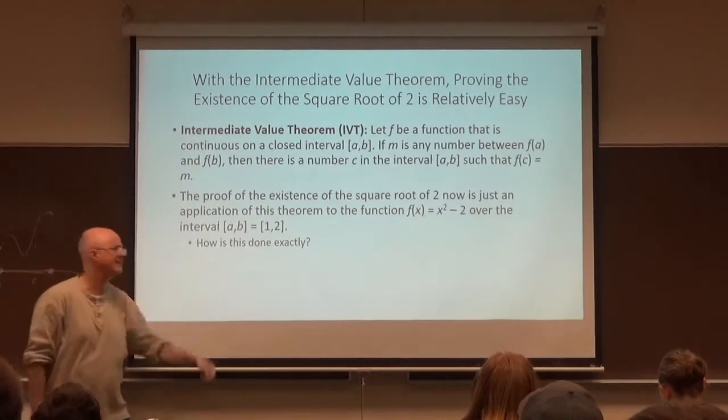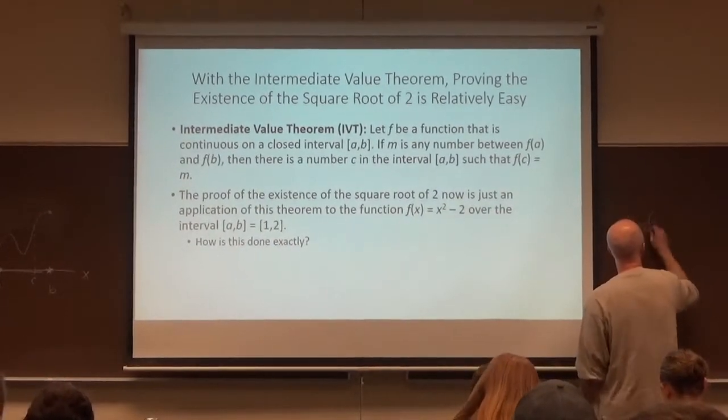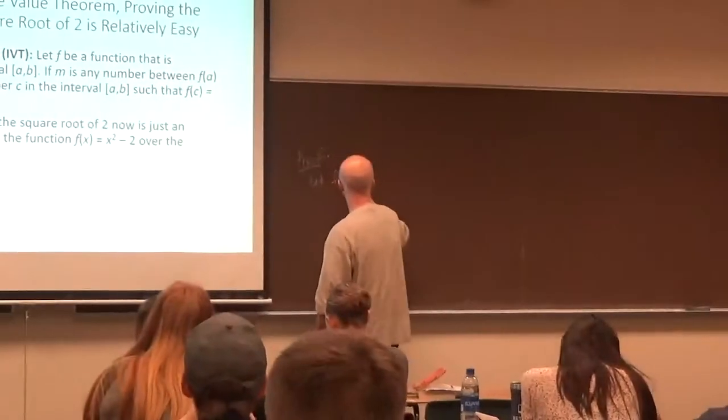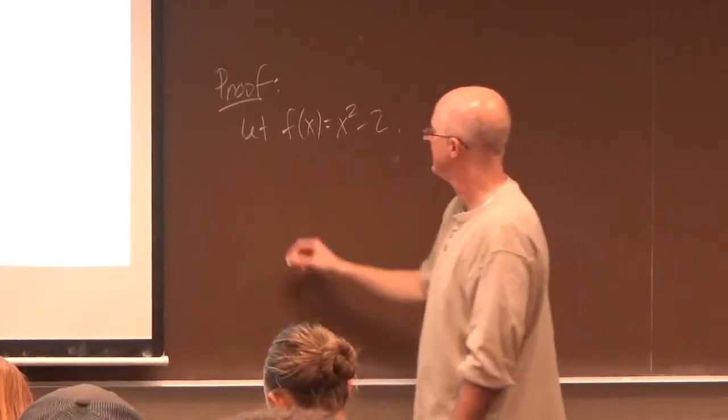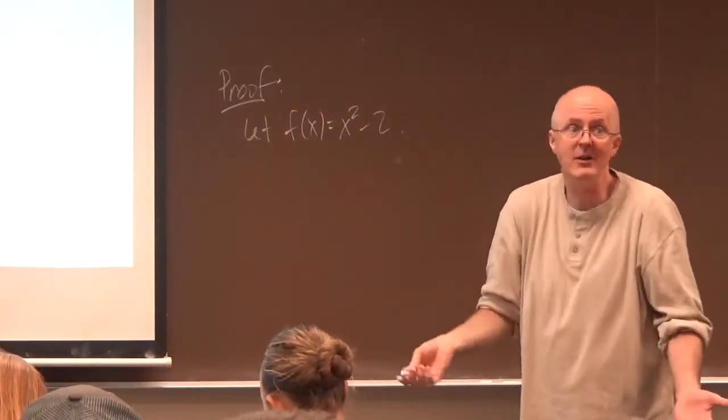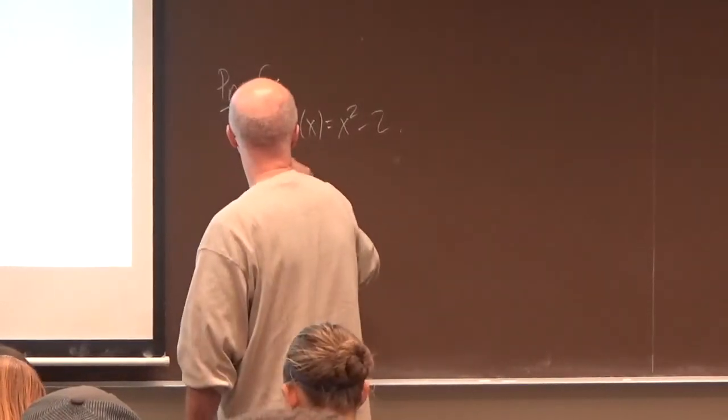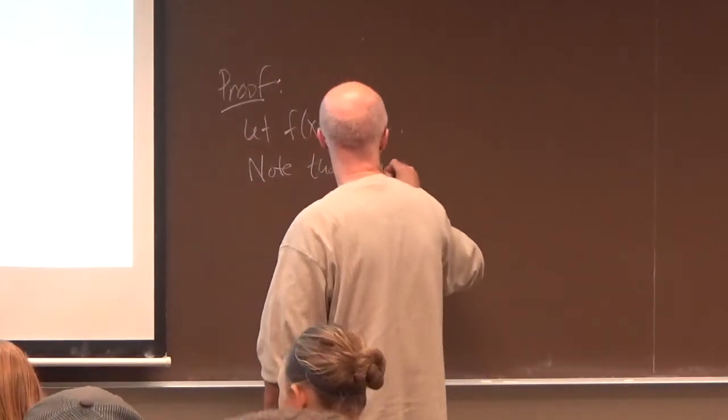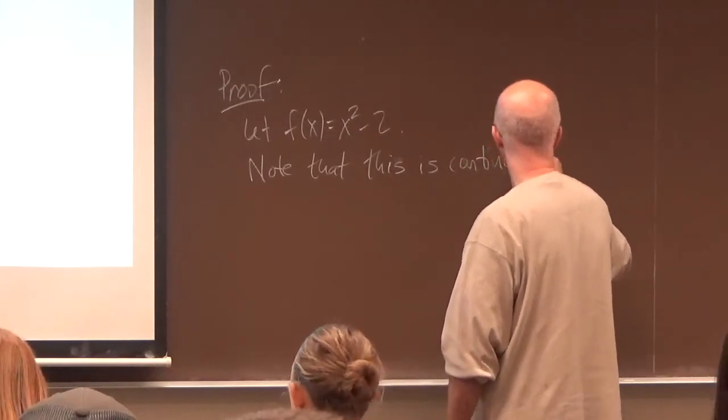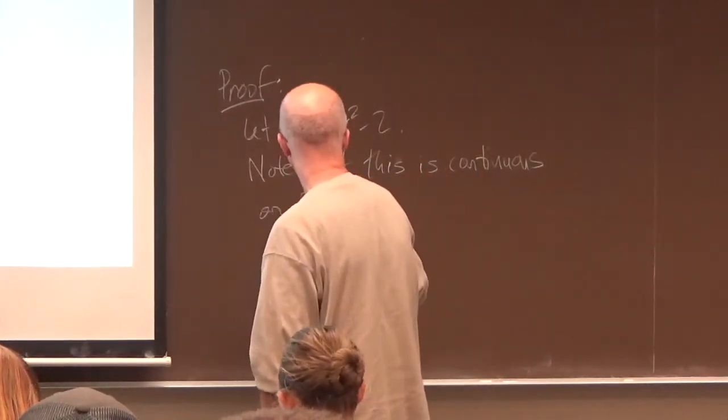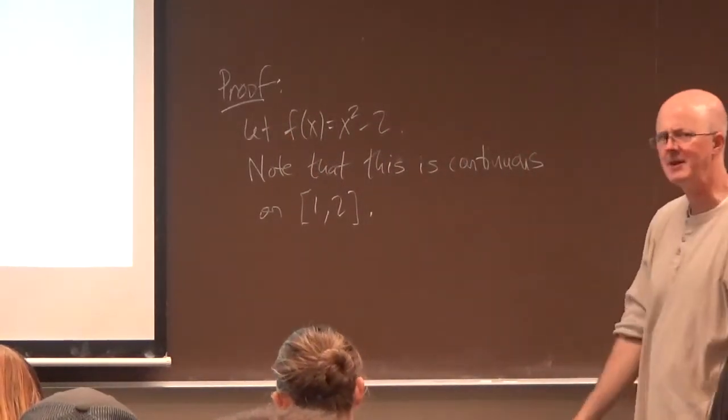How is that done exactly? We can do a quick proof. So you can say let f of x equal x squared minus two. This is a quadratic. It's a polynomial. We know polynomials are continuous wherever they're defined. Note that this is continuous on the interval from A to B, which is going to be one to two here.